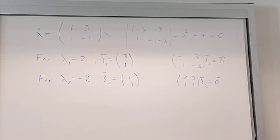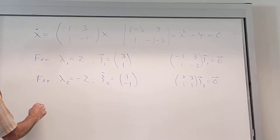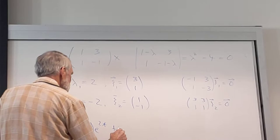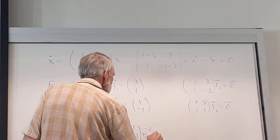Okay, so we then, of course, now have our solution. x of t is going to be equal to c₁ times (3, 1) e^(2t) plus c₂ times (1, -1) e^(-2t), right?